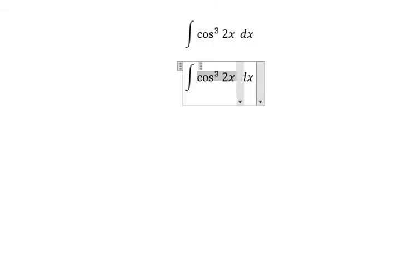About this one, we can put about cosine 2x squared, multiply with cosine 2x. Next, we have the formula.